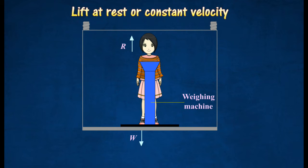The figure shows a girl standing on a weighing machine inside a lift. The forces that act on the girl will be its weight, W, and the reaction force, R.